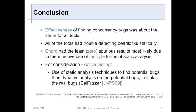In conclusion, when it comes to effectiveness in terms of actually finding real bugs, all of them were about the same - between 30 and 35%. All the tools had trouble finding deadlocks. Cord had the least spurious results - zero - while the others were much higher. Active testing - basically using static analysis and dynamic analysis together - is something to consider for actually finding concurrency bugs.